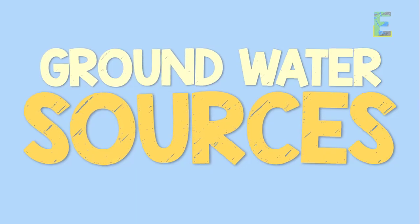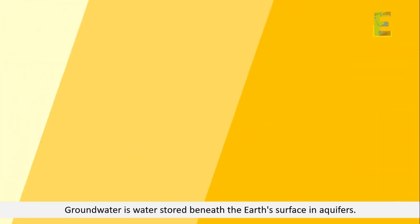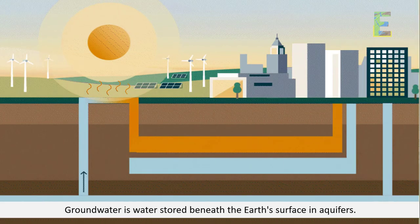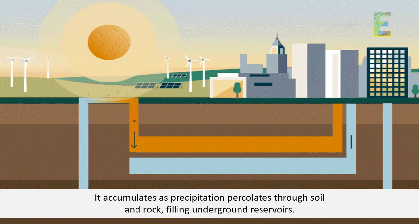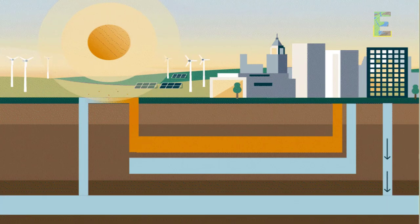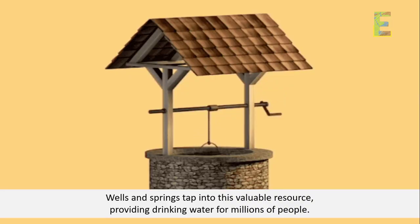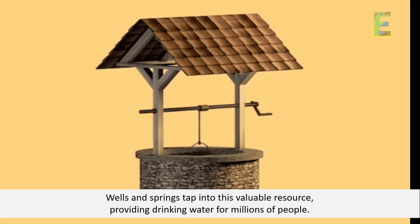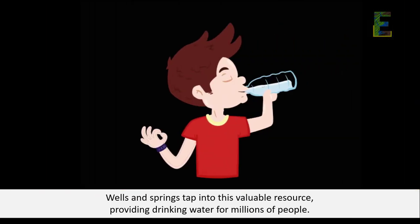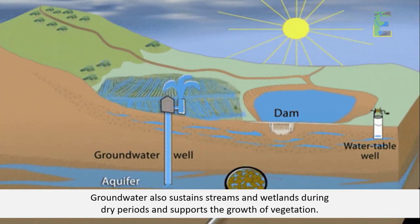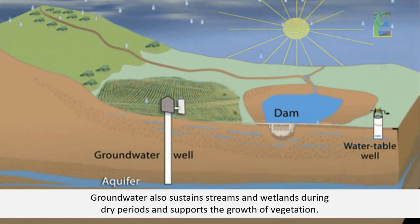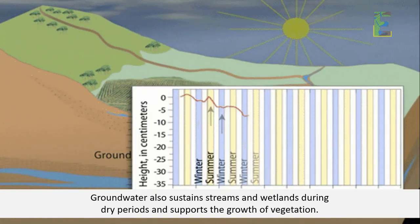Groundwater Sources. Groundwater is water stored beneath the Earth's surface in aquifers. It accumulates as precipitation percolates through soil and rock, filling underground reservoirs. Wells and springs tap into this valuable resource, providing drinking water for millions of people. Groundwater also sustains streams and wetlands during dry periods and supports the growth of vegetation.